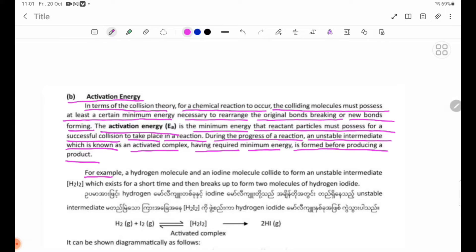For example, a hydrogen molecule and an iodine molecule collide to form an unstable intermediate, H2I2, which exists for a short time and then breaks up to form two molecules of hydrogen iodide.